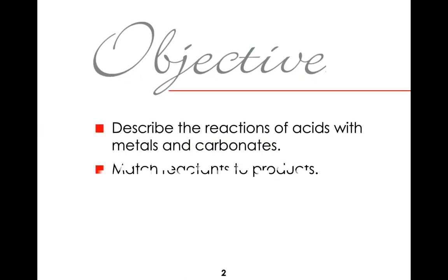Today we'll be looking at reactions of metals and carbonates with acids. We'll be thinking about what reactants end up making products, and how — in a word equation or a chemical equation — the atoms in the reactants have to go somewhere; they can't just disappear. They have to end up inside the products. So if you think about what atoms you have as reactants, you can know what types of products you should be able to make.